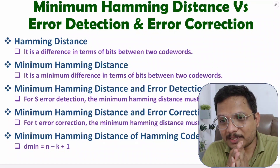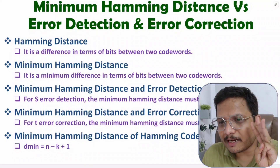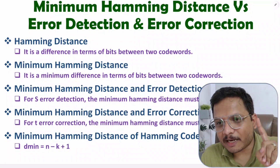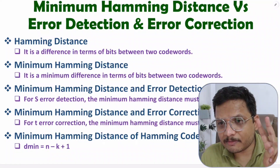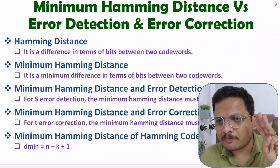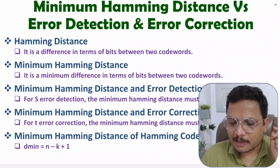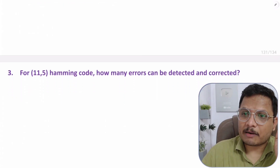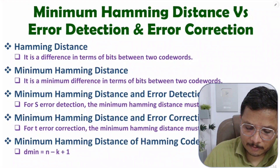Hello friends, welcome to Engineering Funder Family. In this video I'm going to explain three interesting terms: first is minimum hamming distance, second is error detection capabilities of a system, and third is error correction capabilities of a system. After watching this video you can solve many questions based on competitive examinations.